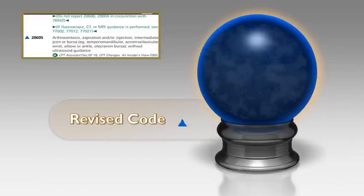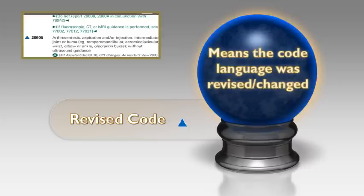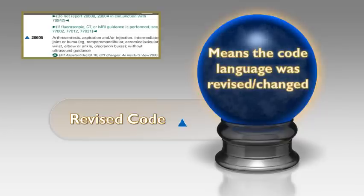The revised code is symbolized by the blue triangle, meaning the language was revised or changed. It's important to take heed when you see this symbol — if the language was changed, it could impact whether or not you should select that code.